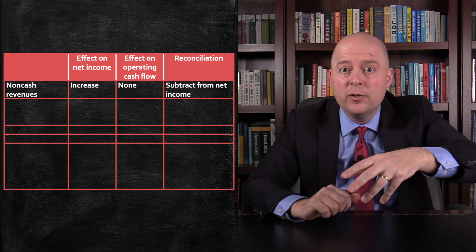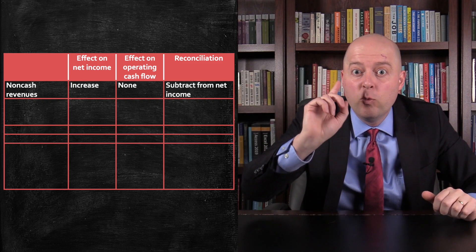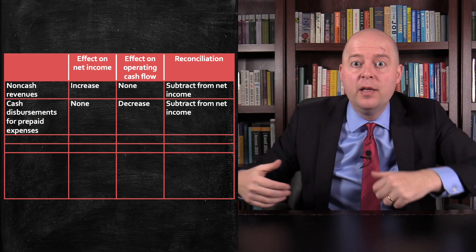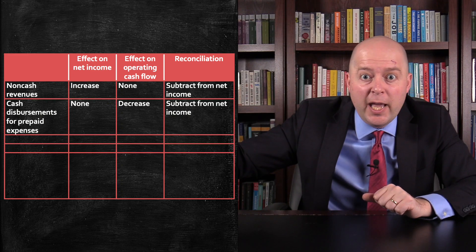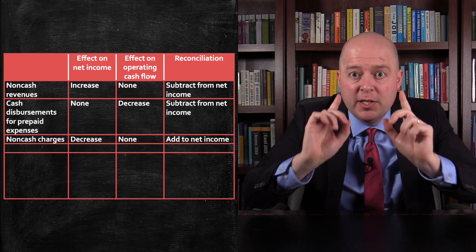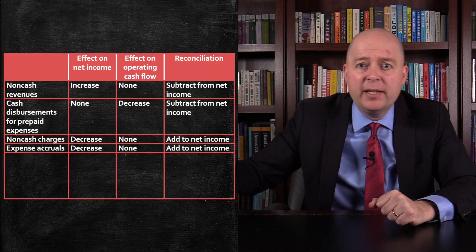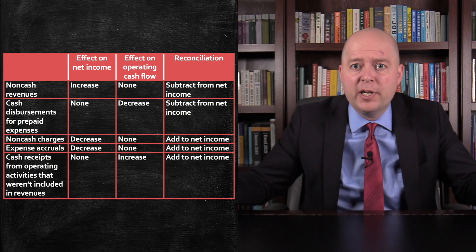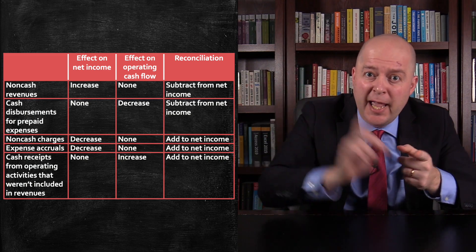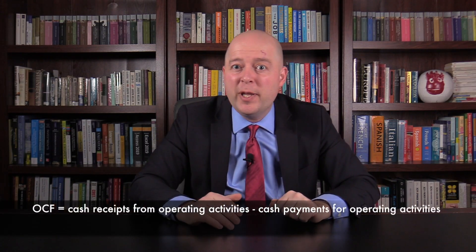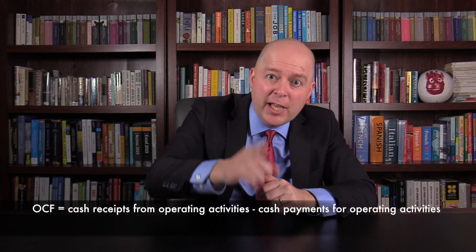Here's how it works. You take net income from the income statement, then subtract non-cash revenues like credit sales, which increased net income but had no effect on cash. Then you subtract cash disbursements for prepaid expenses — things like prepaid rent or prepaid insurance — where the company paid out cash but has not yet recorded an expense. Next, you add back non-cash charges like depreciation, because they decreased net income but had no effect on cash. Then you add back expense accruals, which occur when a company accrued an expense but hasn't yet paid the cash. Finally, you add cash receipts from operating activities not included in revenue — such as cash collected from services not yet performed, or cash collected from a prior period's credit sale. The result is operating cash flow.